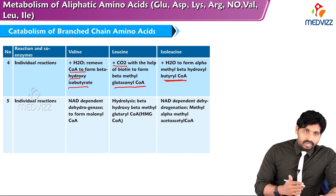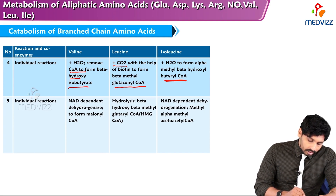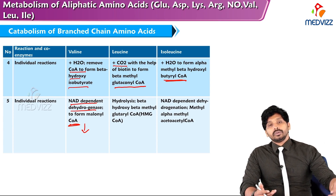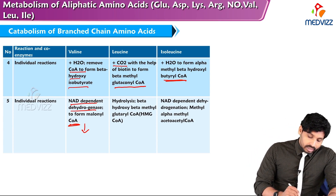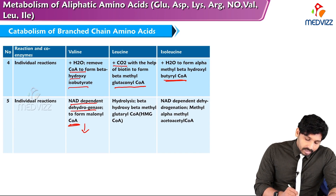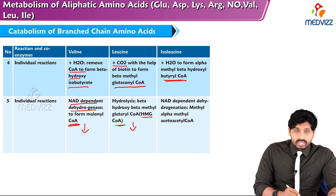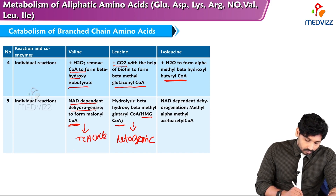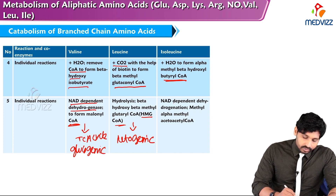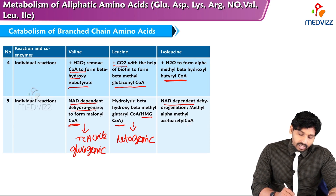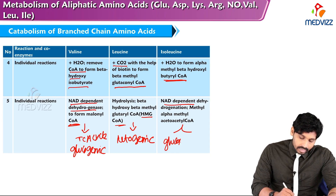In the fifth step, beta-hydroxy isobutyrate from valine undergoes NAD-dependent dehydrogenation to form methylmalonyl CoA, which is then converted to succinyl CoA — succinyl CoA enters the TCA cycle, which is why valine is glucogenic. For leucine, beta-methylglutaconyl CoA undergoes hydrolysis to form HMG CoA (beta-hydroxy beta-methylglutaryl CoA), an intermediate of ketone body synthesis, making leucine ketogenic. For isoleucine, NAD-dependent dehydrogenation yields methylacetoacetyl CoA, which produces both acetyl CoA and propionyl CoA — making isoleucine both glucogenic and ketogenic.